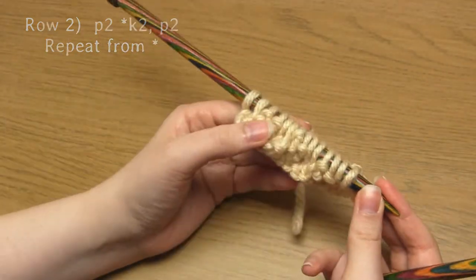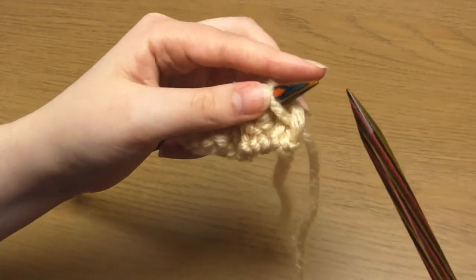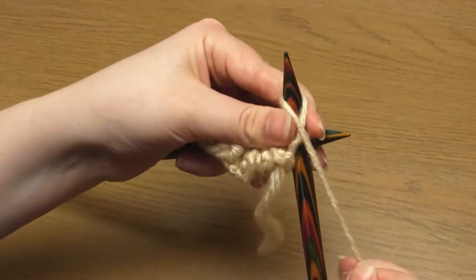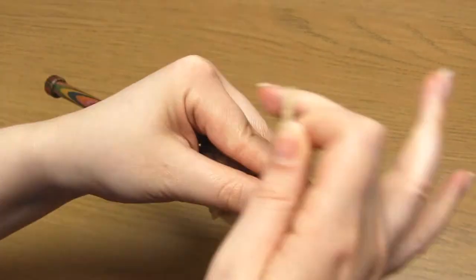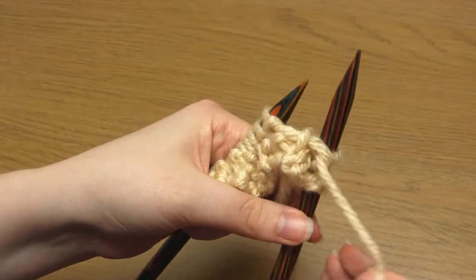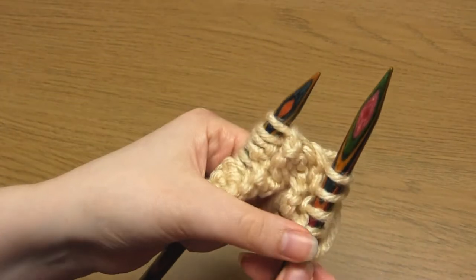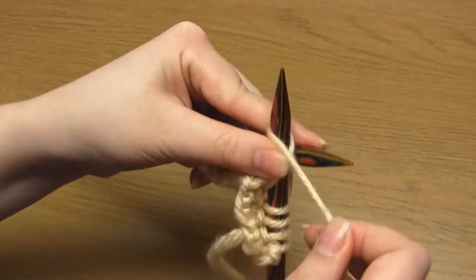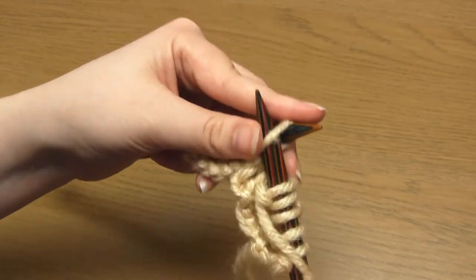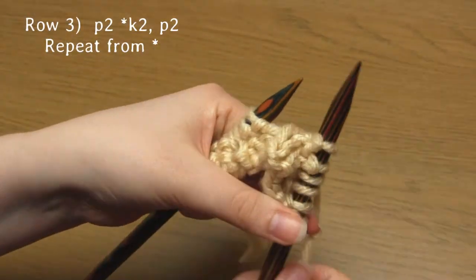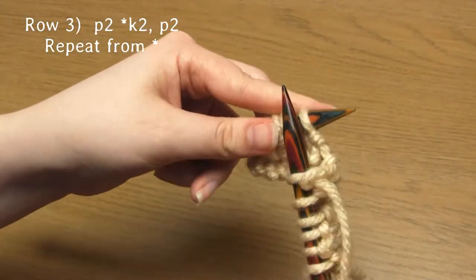Then row three is exactly the same as row two. So that's purl two, knit two and purl two. And then just repeat knit two, purl two until the end of the row.